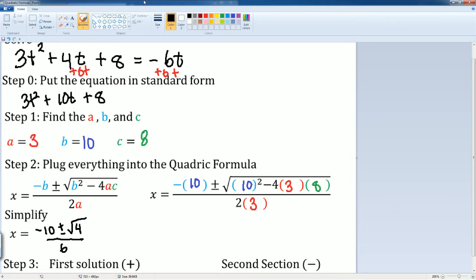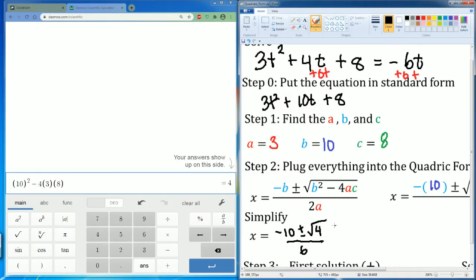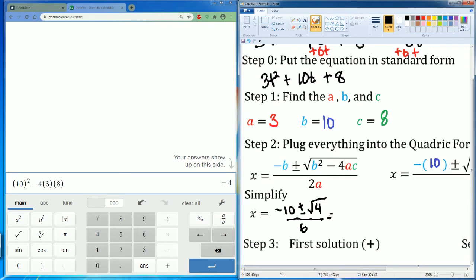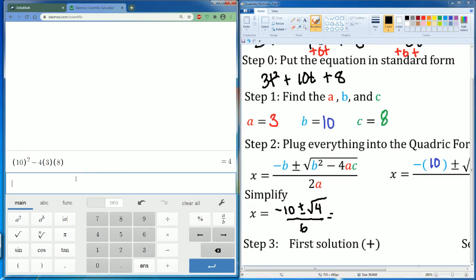Notice, now I can simplify the radical 4 though. The radical 4 can be simplified into 2. So this can be negative 10 plus and minus 2 divided by 6.